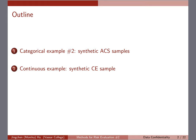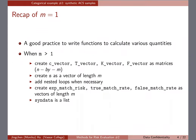The data has 39 categorical variables, ten thousand observations, and all variables are categorical. We're going to see how to do risk evaluation for multiple synthetic datasets. Then I'll ask you to share what you're thinking or what you've done for the continuous example. Whether you're using the sample data or your own project data, feel free to share. So, the recap for m equals one: